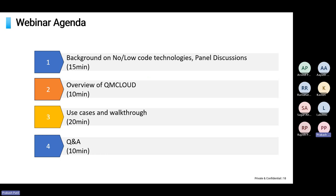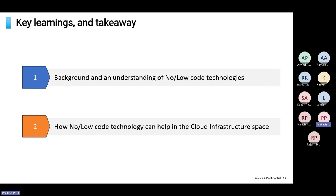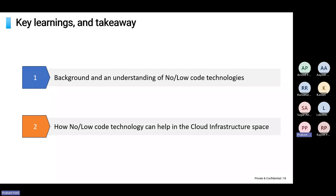The agenda for the webinar: for the first 10-15 minutes I will give a background on local technologies and how they have evolved. Next, I'll give an overview of what QM Cloud is and how it leverages no-code or low-code technologies, followed by a brief demo with a few use cases, and then Q&A at the end. The key takeaway is a better understanding of how this technology can be used in cloud infrastructure space with tools like QM Cloud.